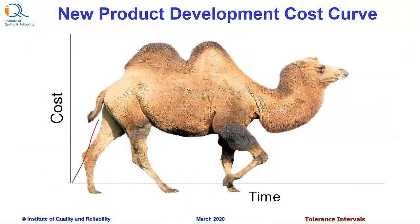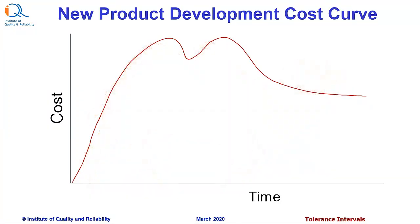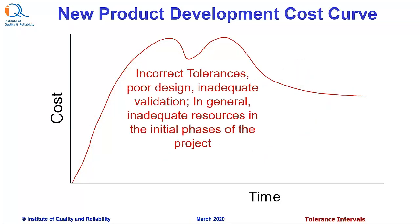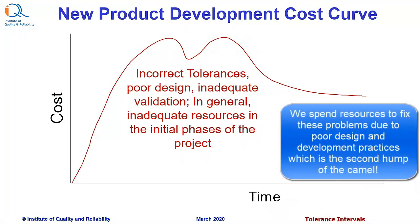Let us look at a typical new product development cost curve. I am showing a double hump camel and the cost curve is amazingly similar to the shape of the camel. This is due to incorrect tolerances, poor design, inadequate validation — in general, inadequate resources in the initial phases of the project. We spend significant resources to fix these problems due to poor design and development practices, which is the second hump of the camel.